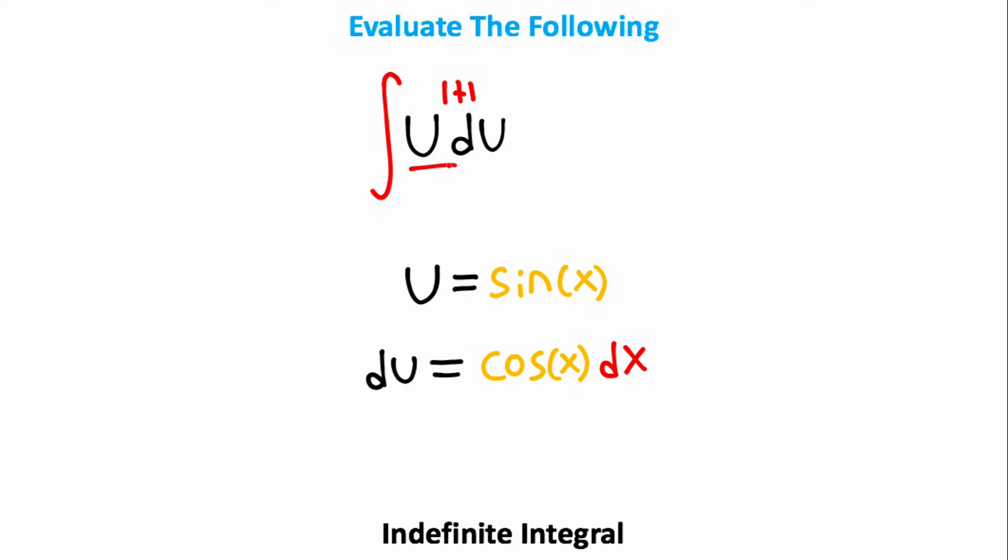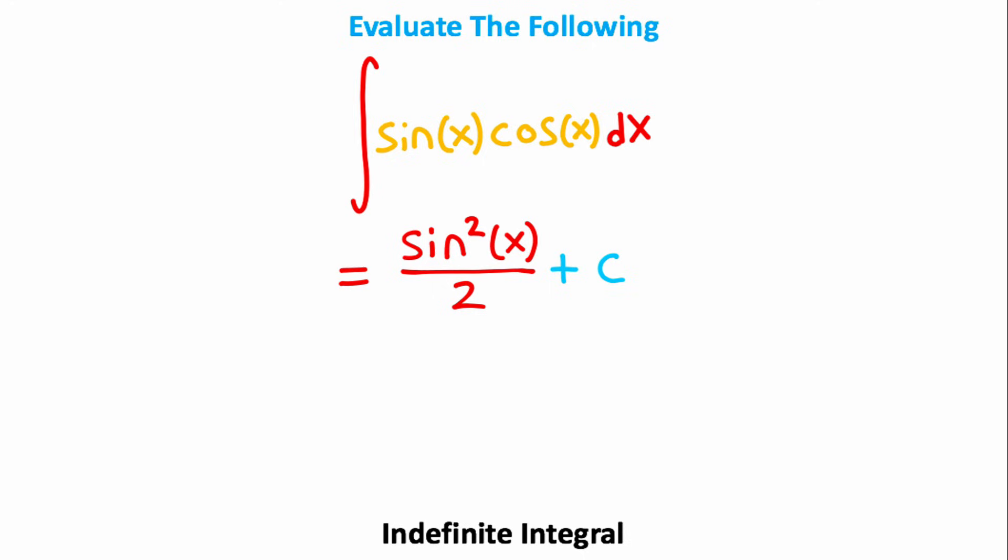I'll add one to the exponent and then divide by that exponent. So this indefinite integral is going to become u squared divided by 2 plus the constant of integration, c. And now that we've integrated this, our last step would be to replace this u with the sine x that we substituted in the first place. So u squared over 2 plus c would become sine squared x over 2 plus c, and that is the answer to the problem.